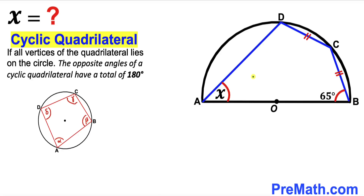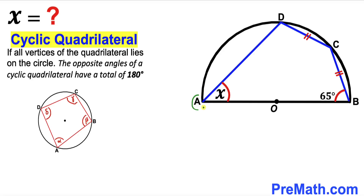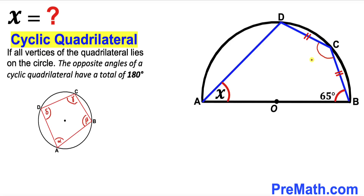Therefore, quadrilateral ABCD is a cyclic quadrilateral since all its vertices A, B, C, and D lie on the same circle. Furthermore, angle DAB and its opposite angle BCD must sum to 180 degrees. So angle BCD equals 180 degrees minus x. Adding these two opposite angles confirms they sum to 180 degrees.